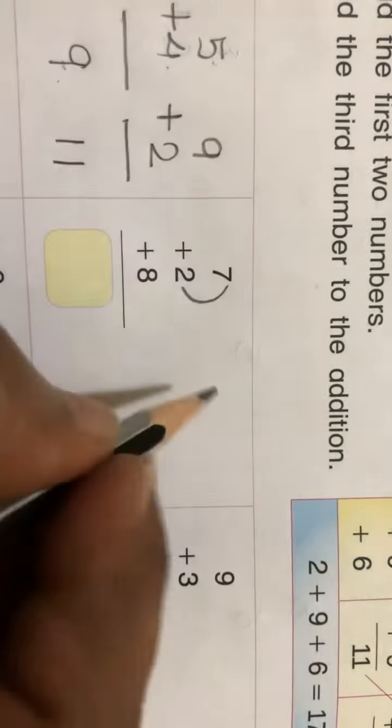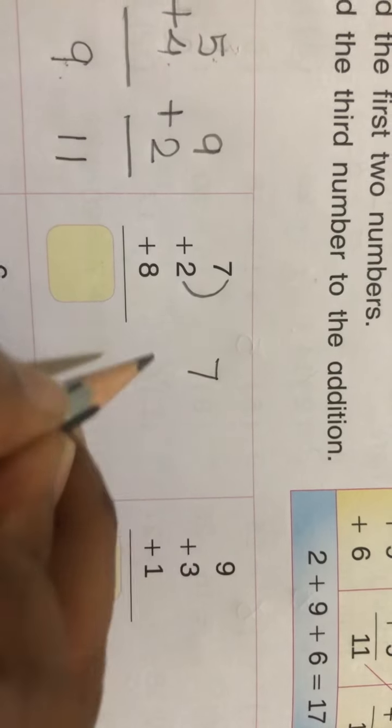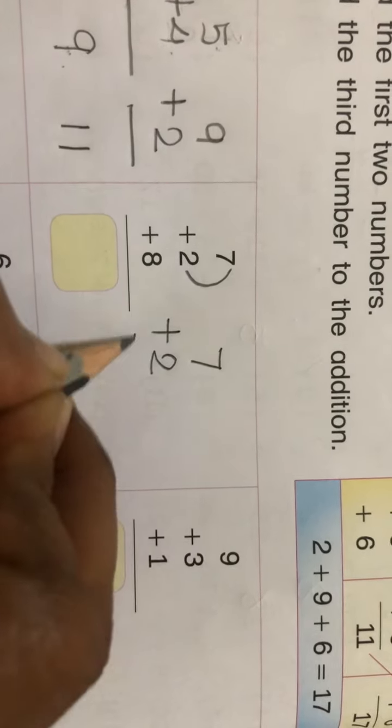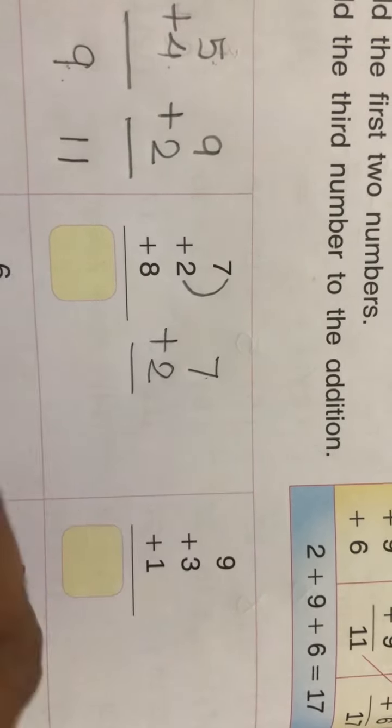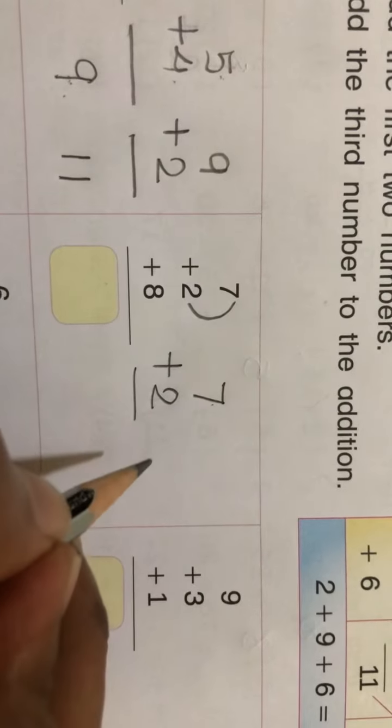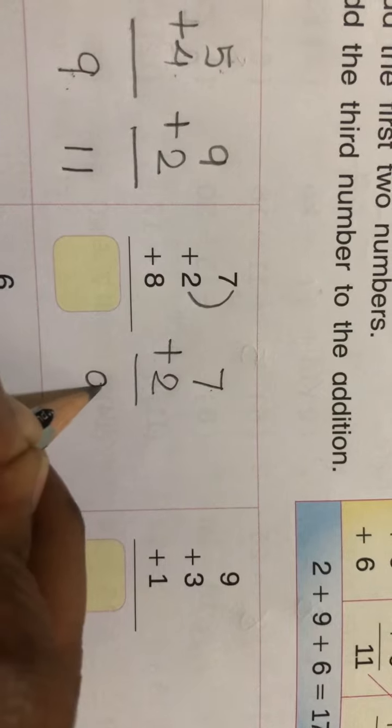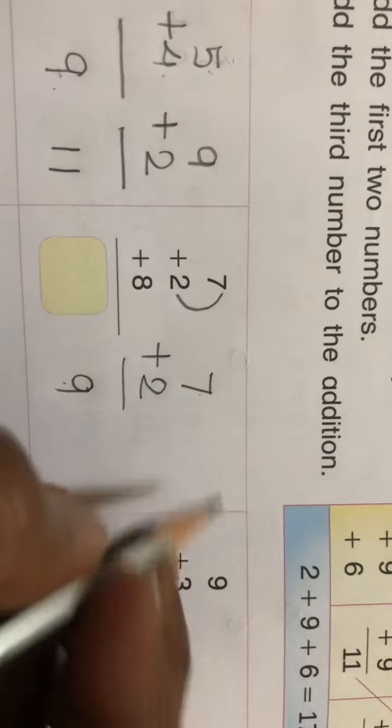Add these two first: 7 plus 2. So it will give, after 7, two numbers ahead, you have to move to 8 and 9. That will be your answer, okay? Now 9 you will write first.